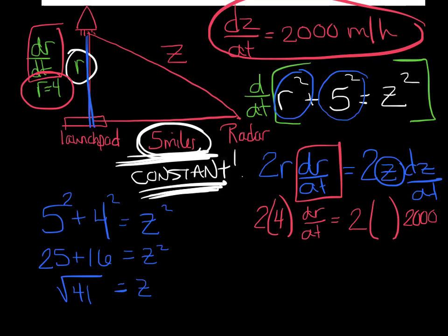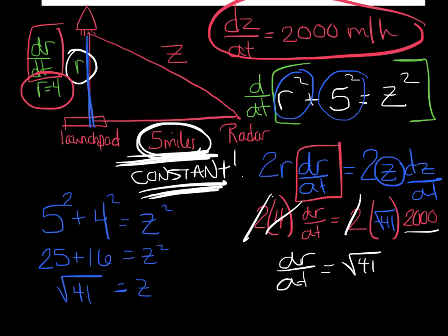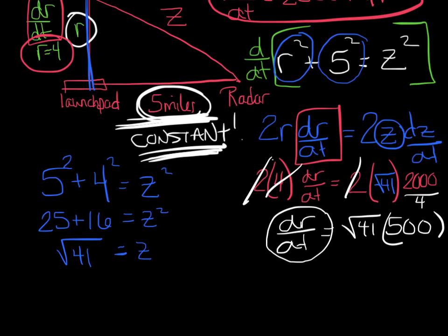I can substitute that into my equation. The 2's on each side cancel, so dR/dt = √41 × 500. Let's take note of our units — you found a rate with respect to time, so we should have miles per hour.